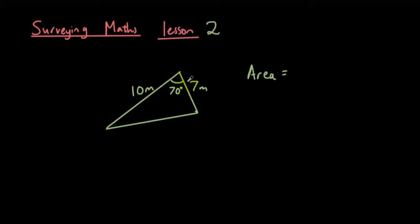So the way you would do that is unfortunately you have to learn a new formula, and the formula we're going to use is half times a times b times sine C. This is called the area of a triangle using the sine rule formula.